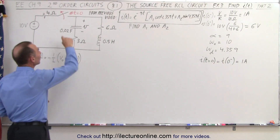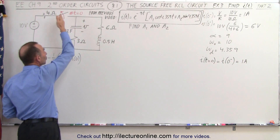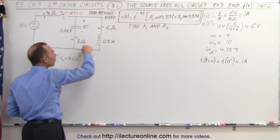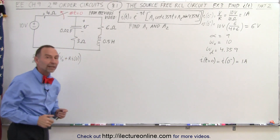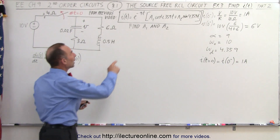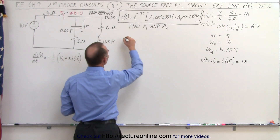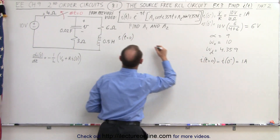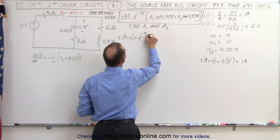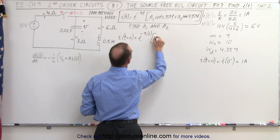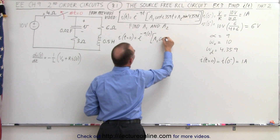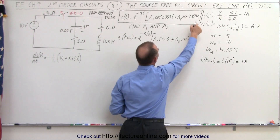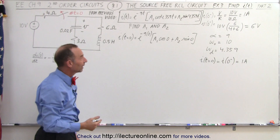So right before the switch opens we had 1 amp of current. Right after the switch opens we still will have 1 amp of current in this part of the circuit. So we're going to solve the current equation for t equals zero. When t is equal to zero, which we know equals 1 amp, we get e to the minus nine times zero, times a1 times the cosine of zero, plus a2 times the sine of zero.